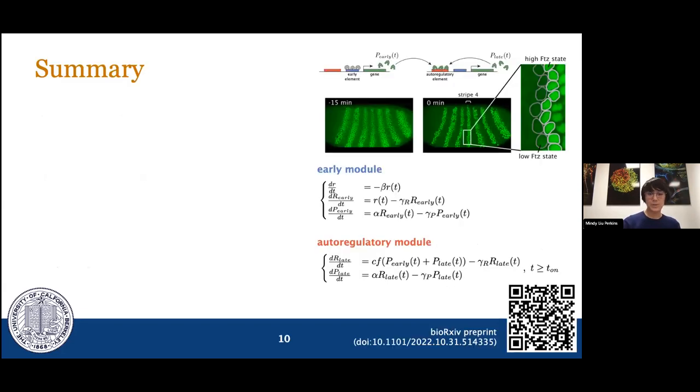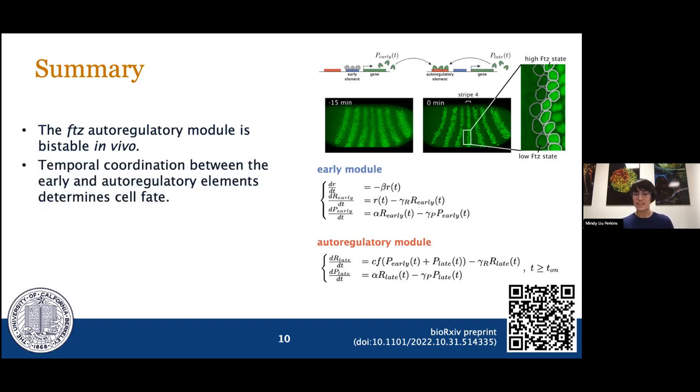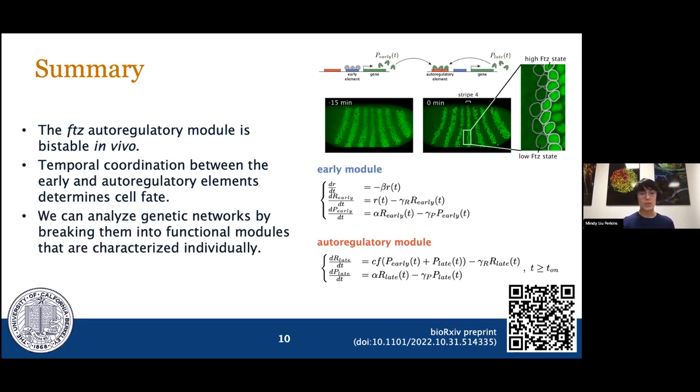In summary for this work, we developed a dynamical systems model for FUTs autoregulation and quantified all of the parameters to show that at least in this embryo, in this context, this motif is bistable in vivo. Furthermore, we showed that there's temporal coordination between these early and autoregulatory elements that help determine the cell fate. Finally, on a more broad modeling scale, we also showed how we can successfully analyze the behavior of a genetic network by breaking it into functional modules that we characterize individually. I hope that kind of approach might be able to generalize to other networks.